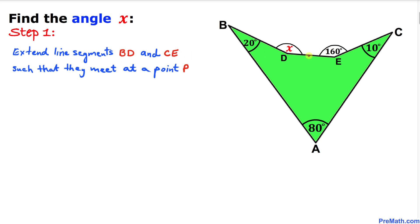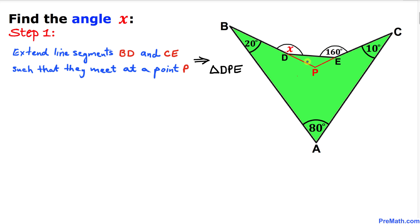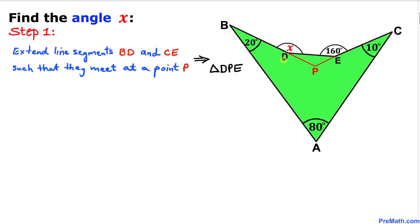Let's get started with the solution. Our very first step is to extend line segments BD and CE such that they meet at some point P. Let's extend this line all the way over here, and extend this line as well so they meet at point P. As a result we have got this triangle DPE as you can see.